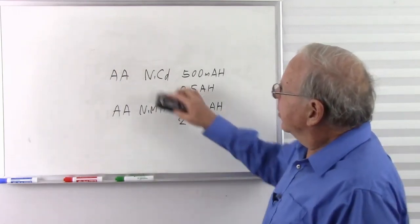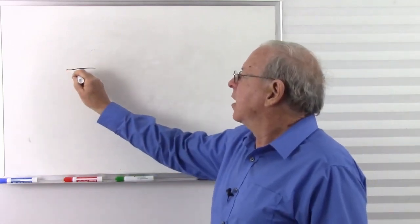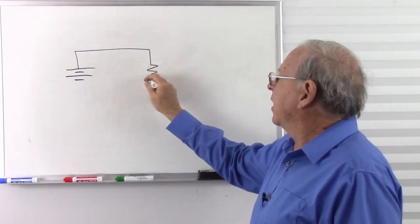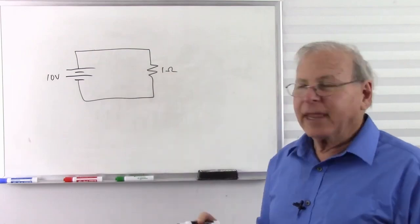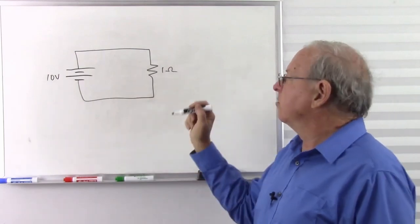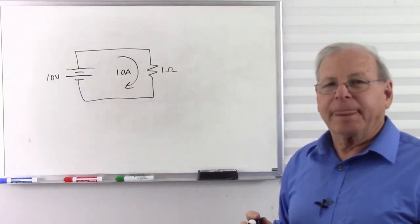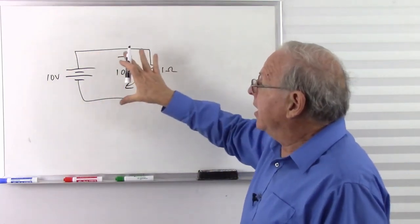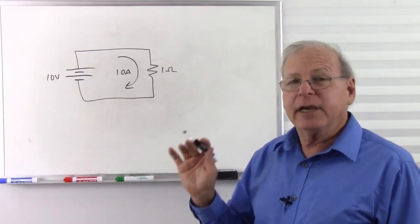Another aspect of batteries is a property called internal resistance. When we talk about batteries in circuits on the whiteboard, we'll make a circuit and say, okay, there we have a 10-volt battery and a one-ohm resistor — how much current am I going to get? Ohm's law says 10 volts divided by one ohm gives 10 amps. But what we do in classroom circuits is make an assumption that's definitely not true: that the battery will produce 10 volts no matter how much current is coming out of it.